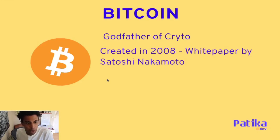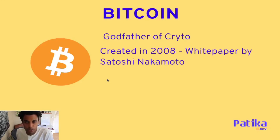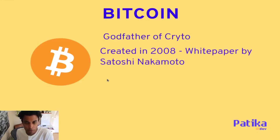Bitcoin was created in 2008 by a white paper, famously by Satoshi Nakamoto, which no one knows who exactly it is. A white paper, in case you're not familiar with the concept, is really a part technical, part philosophical approach to explain what the concept is, how it might work if it was implemented, and even giving some guidance to engineers and developers on how they might want to implement it. That's what the Bitcoin white paper was describing.